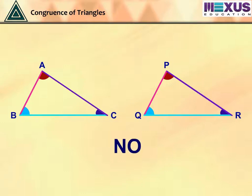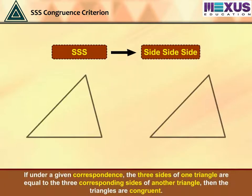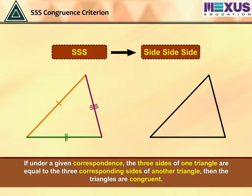The answer is no. By using some congruence criterion, we can verify the congruency of a triangle by knowing the measures of only three parts of the triangle. The first criterion is SSS, that is, side-side-side criterion. It states that if, under a given correspondence, the three sides of one triangle are equal to the three corresponding sides of another triangle, then the triangles are congruent.